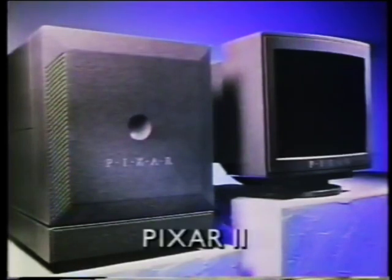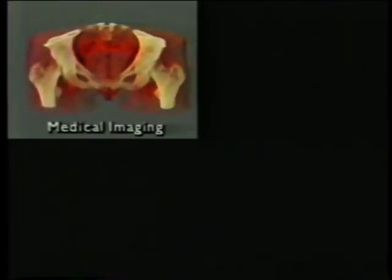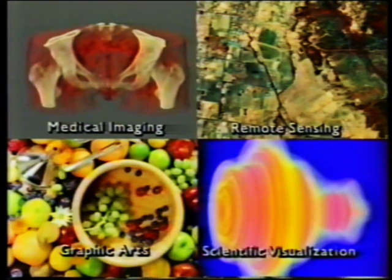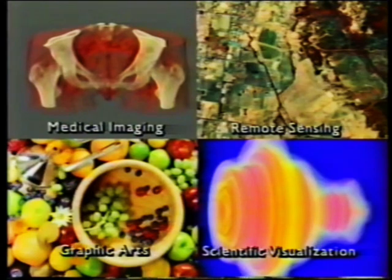The Pixar family of image computers consists of the original Pixar image computer, the new lower-priced Pixar 2, and includes a C compiler and software toolkits for developing specific applications. Pixar's image computers are being used in medical imaging, remote sensing, graphic arts including 3D design and animation, and scientific visualization — an emerging field that requires the display of data from computational and experimental scientific disciplines. We will now demonstrate some examples of image computing drawn from applications in these markets.